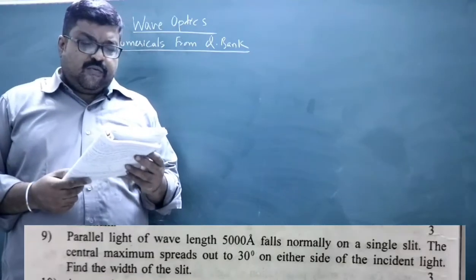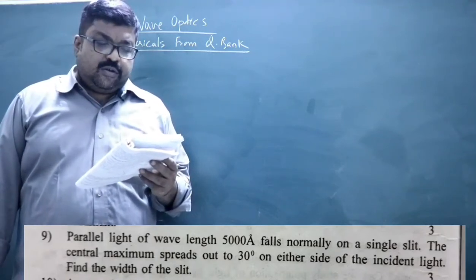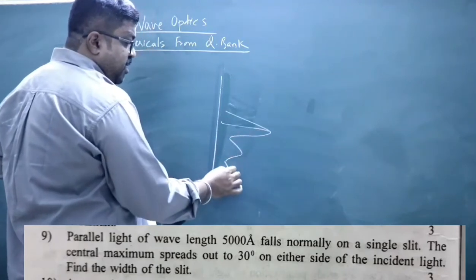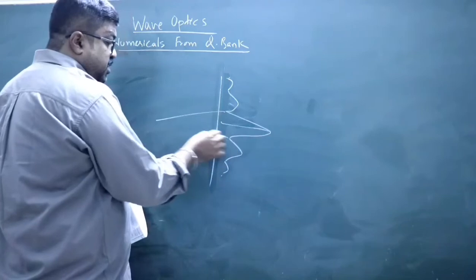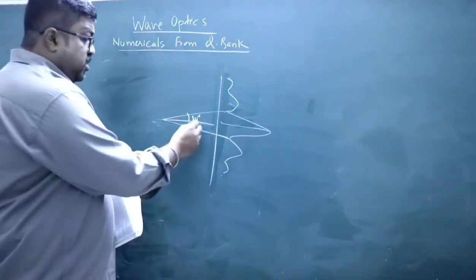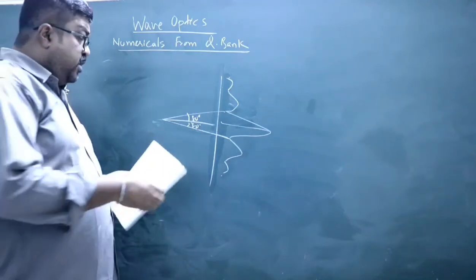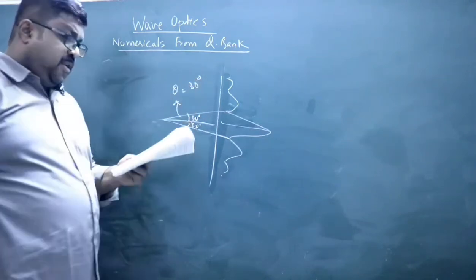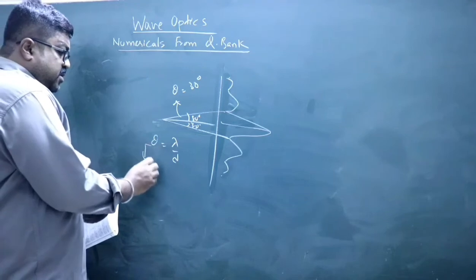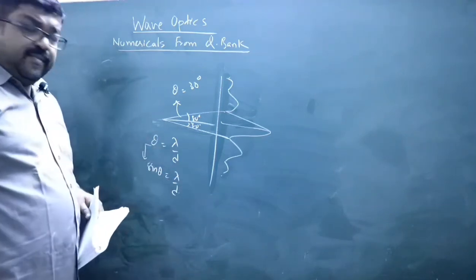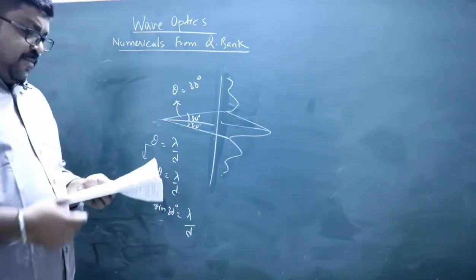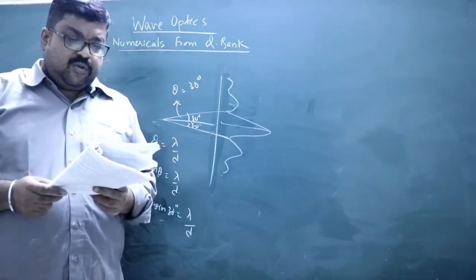Question number nine: Parallel light of wavelength 5000 Å falls normally on a single slit. The central maximum spreads out to 30° on either side of the incident light. Find the width of the slit. The angular position of the first minimum is given by sinθ = λ/d. Here θ = 30°, so sin 30° = λ/d. Since λ is given, you can calculate d.